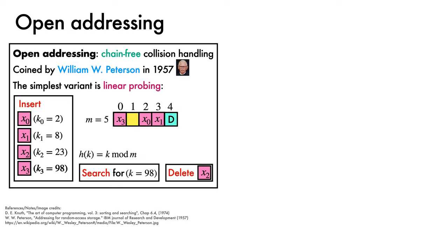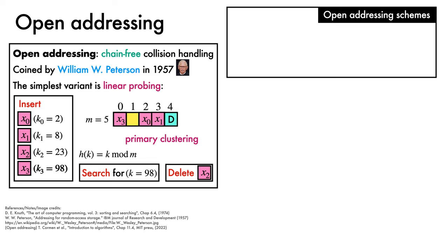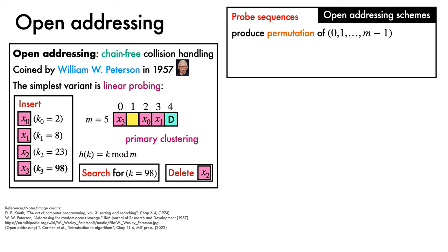One thing you might have noticed is the natural tendency of linear probing to form long chains of collisions, an effect referred to as primary clustering. Since this can lead to many consecutive probes, alternative open addressing schemes have also been explored. In general, open addressing requires the construction of probe sequences, in which a hash function produces not just a single slot, but a sequence of slots. This sequence must correspond to a permutation of the integers 0 to m-1, to ensure that each possible slot in the hash table is visited. One general scheme for achieving this, while avoiding primary clustering, is to employ double hashing, where two hash functions are combined to produce a probe sequence. Here, i indexes the position in the probe sequence. To ensure that this sequence does indeed visit every slot, h2(k) and m must be co-prime. Linear probing can in fact be viewed as a special case of double hashing, with a second hash function that maps every key to the value 1.